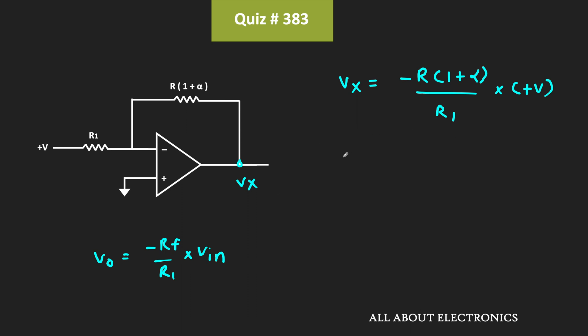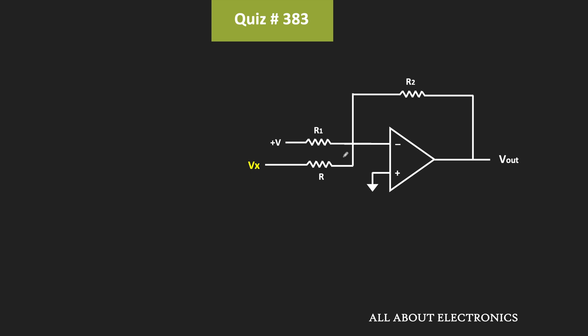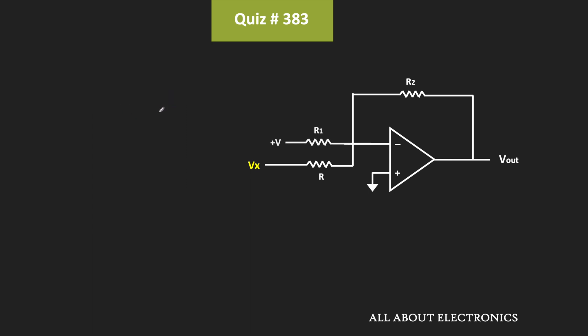This voltage Vx is applied to the second op-amp. To find the output of the second op-amp, let us consider one voltage source at a time using the superposition principle. First, let us consider Vx alone and assume the second voltage is equal to zero. Because of virtual ground, that terminal will be at ground potential, and the second terminal of resistor R1 is already at ground potential, meaning R1 is effectively not appearing in the circuit. In this case the output vo1 is equal to minus R2 divided by R times Vx. Now let us consider the second source, plus V volts, acting alone with Vx equal to zero.